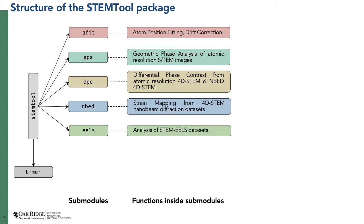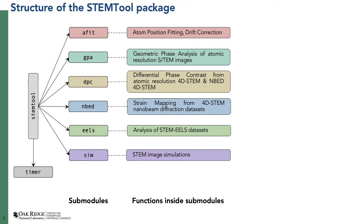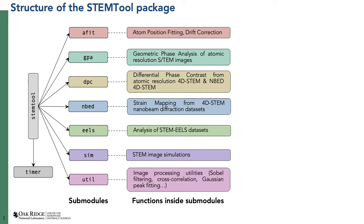The fifth sub-module is EELS, for analyzing mostly core-loss STEM EELS datasets. After that there is SIM, which does elastic STEM image simulations. Since there is no inelastic STEM imaging inside SIM, you cannot simulate EELS datasets, but you can simulate normal STEM images or 4D-STEM images. The last sub-module is UTIL, which is like a Swiss army knife with image processing utilities like Sobel filtering, cross-correlation, Gaussian peak fitting, and so on.